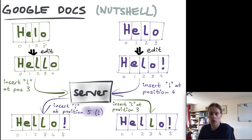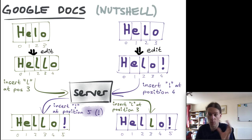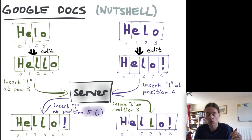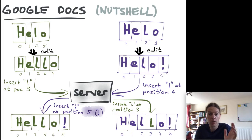Going in the other direction — taking the exclamation mark insertion from the right to the left — if we simply forward 'insert exclamation mark at position four' unchanged, the left-hand user would end up with 'hell!o', which is wrong. Instead, the exclamation mark needs to be inserted at position five, because there was a concurrent insertion at position three. This is why the algorithm is called operational transformation: we take insertion and deletion operations and transform their indexes depending on which other operations happened concurrently.